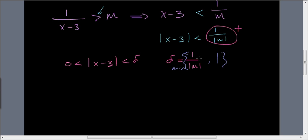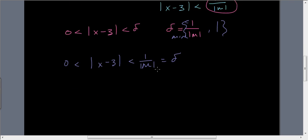So if I do that, then I know that 0 is less than x minus 3 is less than 1 over m, which is delta. So now, because of that, because of that now, I can say that x minus 3 is less than 1 over m, which means because we're always talking about positive, that x minus 3 is less than 1 over m, which also means that 1 over x minus 3 is greater than m. That's what we wanted to prove.